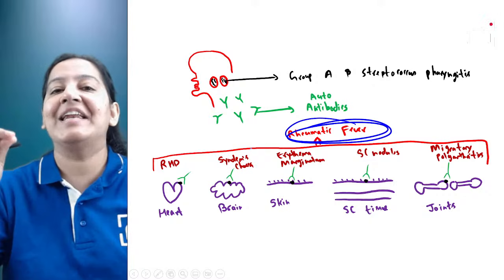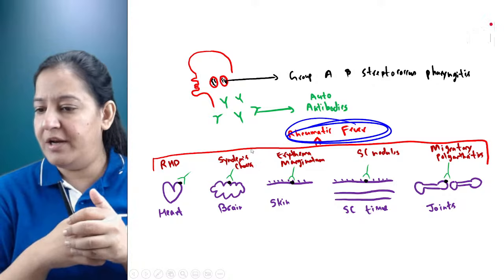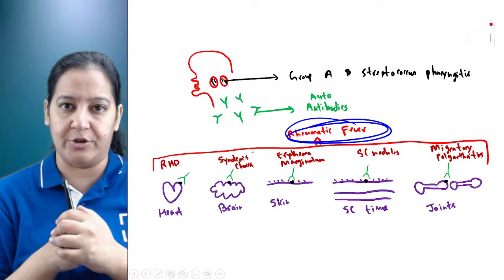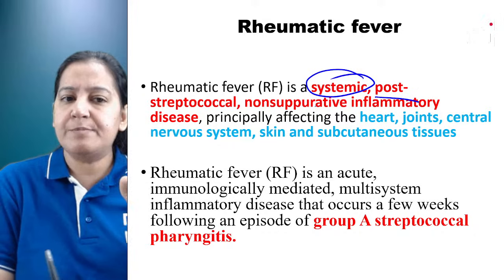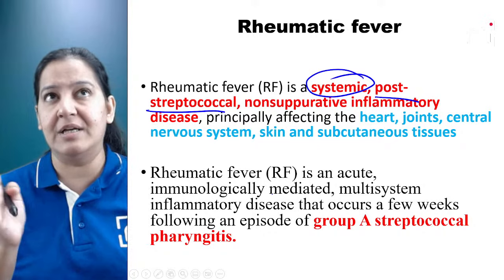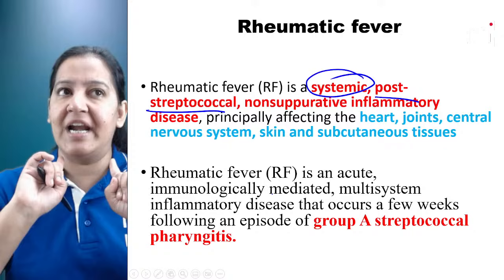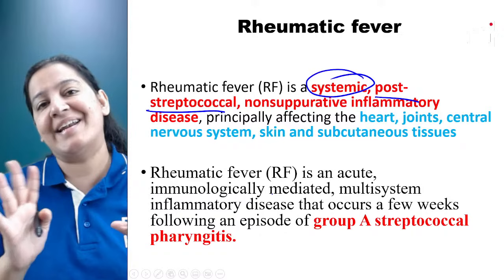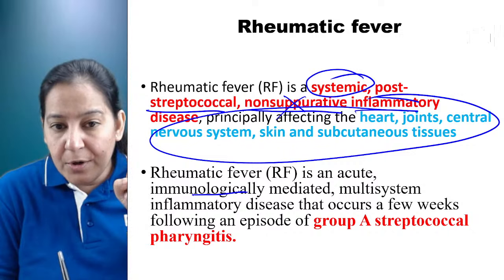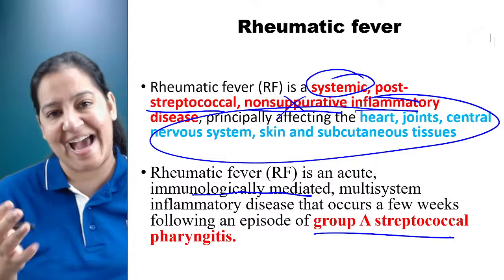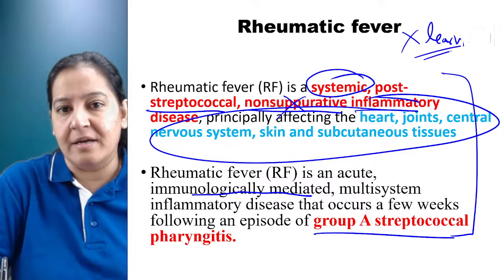The five organs give five diseases: in the heart — rheumatic heart disease; in the brain — Sydenham's chorea; in the skin — erythema marginatum (red lesions); in the subcutaneous tissue — subcutaneous nodules; and in the joints — migratory polyarthritis. Together, these five diseases are known as rheumatic fever. It is a multi-system, post-streptococcal, non-suppurative, inflammatory, immunologically-mediated systemic disease.